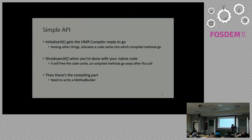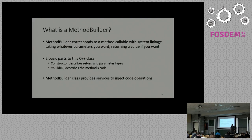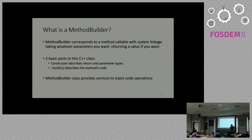Using JIT Builder is straightforward: there's a simple initialize and shutdown API - put those in your runtime's initialization and shutdown code and you're ready to go. Then you actually have to start using it to compile your methods or functions. To do this, we've created a method builder. If you're familiar with LLVM, some of the terminology is similar since we're doing the same types of things.